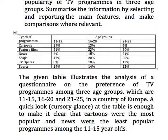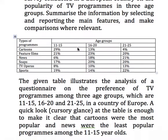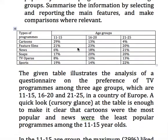So this is a graph. You can see there are four columns. In one column there are the type of programs. In the other three columns we have the age groups. And this is the result of a survey on the popularity of TV programs.